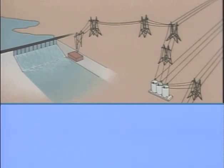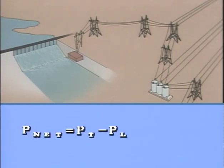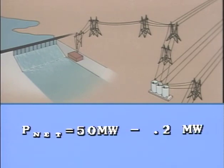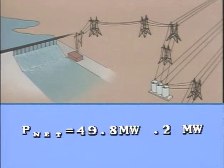The net power at the distribution station can be determined by taking the power transmitted and subtracting the power loss. If the power in the phase is 50 megawatts and there's a power loss of 0.2 megawatts, the distribution station receives 49.8 megawatts of power.